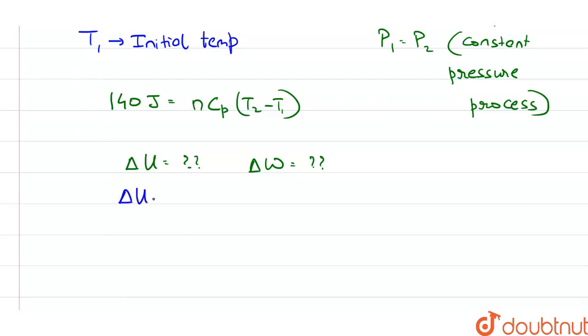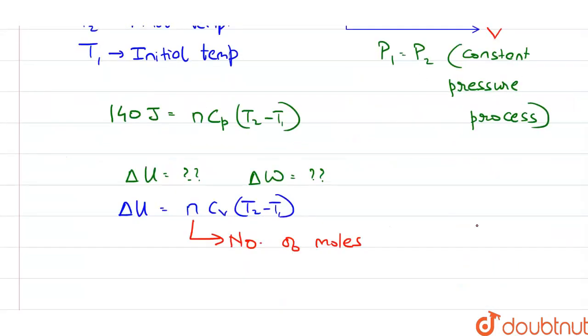Now we know that delta U is equal to N Cv times T2 minus T1, where Cv is the specific heat at constant volume and N is the number of moles. We are not given the number of moles, so let's just take it as a variable small n.